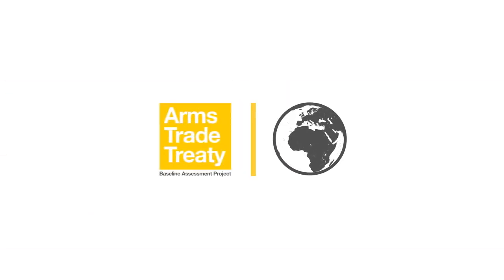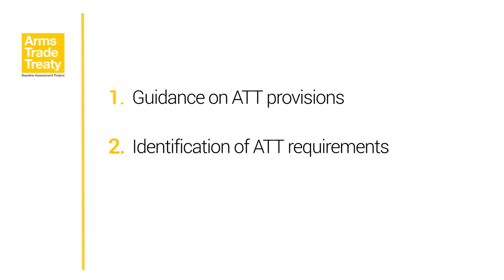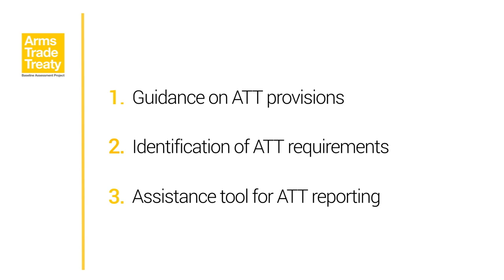The Arms Trade Treaty Baseline Assessment Project, or ATT-BAP, seeks to help states in three ways. First, it provides clear guidance on the Arms Trade Treaty, or ATT's, provisions. Second, it helps states identify whether their existing arms transfer control systems fulfill ATT requirements and where elements might need to be developed or strengthened. Third, it serves as a tool to assist states' parties in fulfilling their reporting obligations.